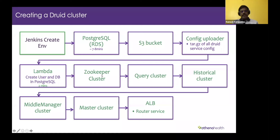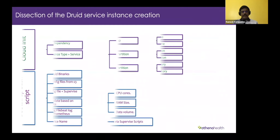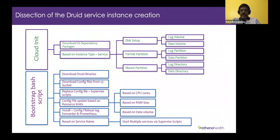The Druid cluster is basically a ZooKeeper cluster which gets spun up, and then correspondingly all four different clusters as seen in the architecture. We also create an application load balancer, and we have a target group for the router service behind that target group. Since Terraform is a modular tool, we could write one single module for the entire Druid service.